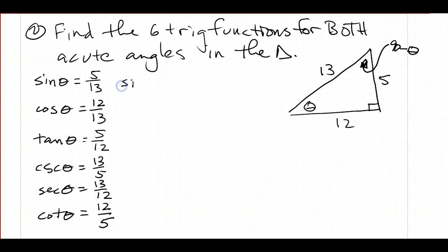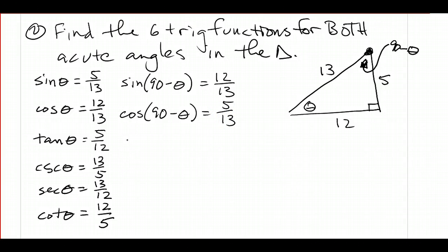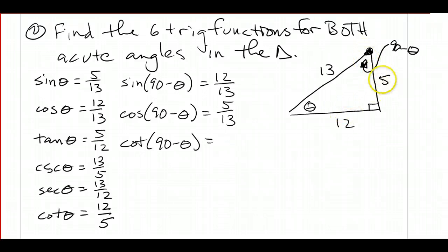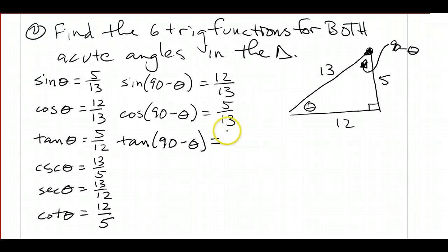Now what I want to do is find the trig functions for the angle 90 minus theta. The sine of 90 minus theta — sine is opposite over hypotenuse — so that's 12 over 13. The cosine of 90 minus theta is adjacent over hypotenuse, so that's 5 over 13. And the tangent of 90 minus theta is opposite over adjacent, so that's 12 over 5.